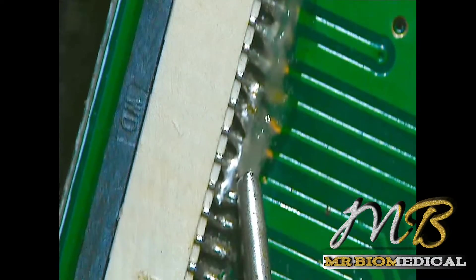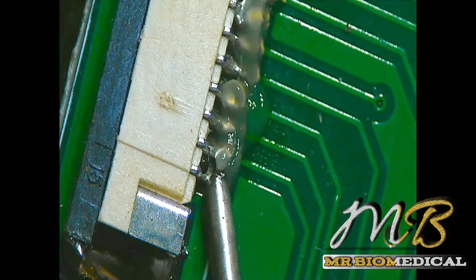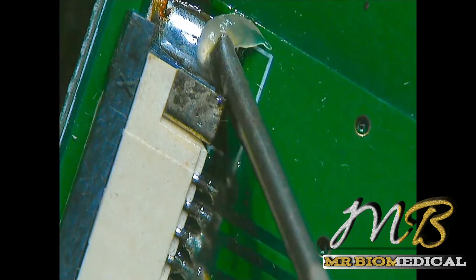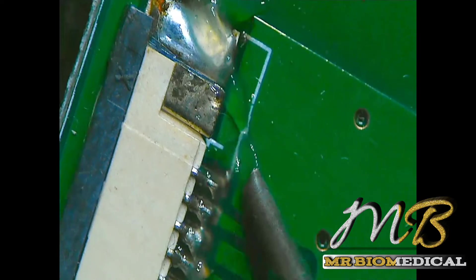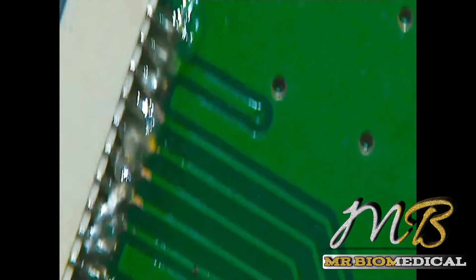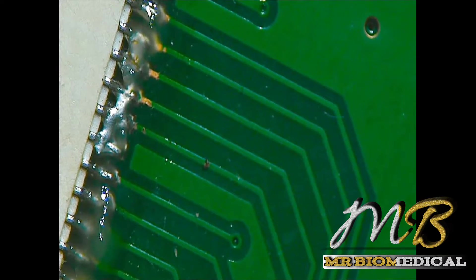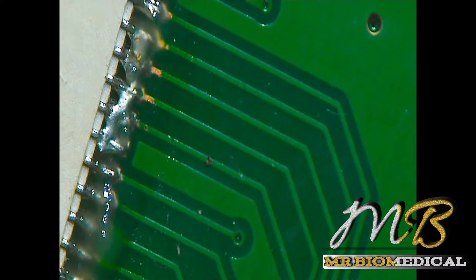Now I'm using flux to easily remove from the board. The more flux you use, the more smoothly it will come. Apply the flux. Now the part is we have to heat from the back side, then only it will be smoothly removed from the board.